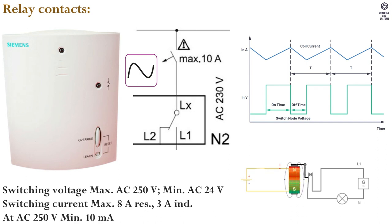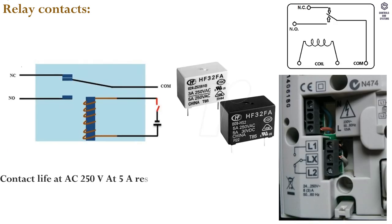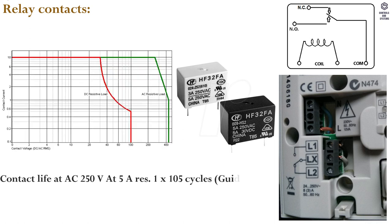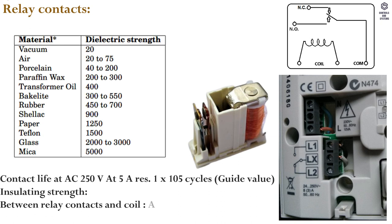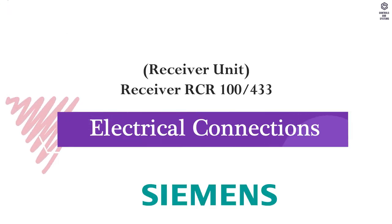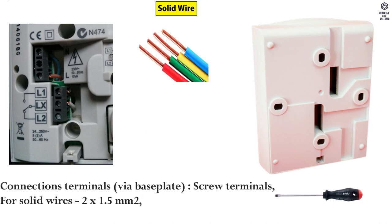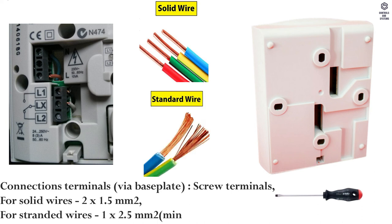At AC 250V minimum 10 mA. Contact life at AC 250V at 5Ω resistive is 1×10⁵ cycles (guide value). Insulating strength between relay contacts and coil is AC 5000V; between relay contacts same pole is AC 1000V. Electrical connections via base plate use screw terminals: solid wires 2×1.5 mm², stranded wires 1×2.5 mm².